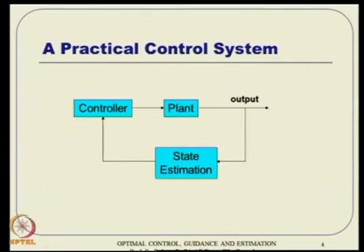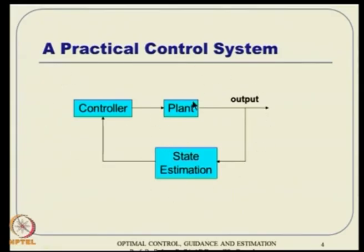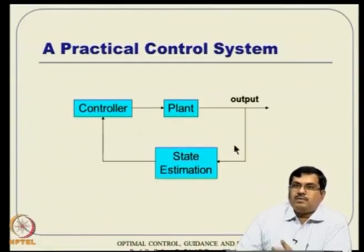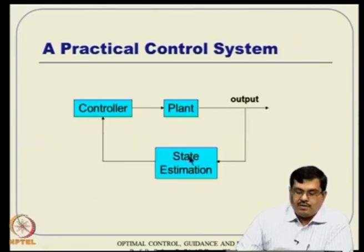One idea is to put an estimation in the loop. State feedback control requires state information, but instead of directly measuring all states — which are noisy — why not put an estimation in the loop that filters out sensor and plant noises? Even if you think you do not need to design an estimator, sensors like inertial navigation systems have built-in filters inside the instrumentation package.